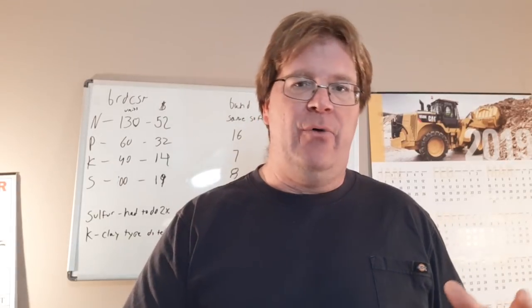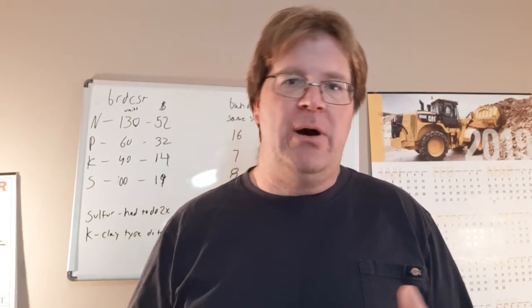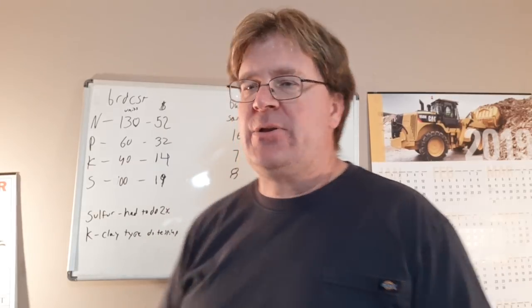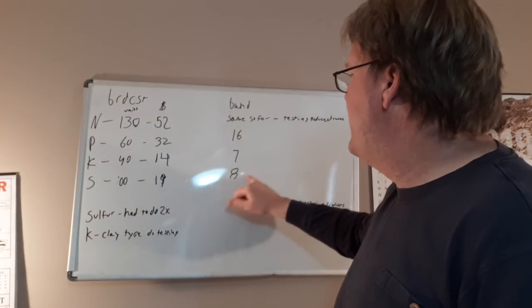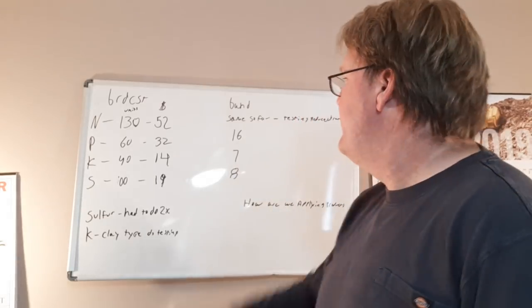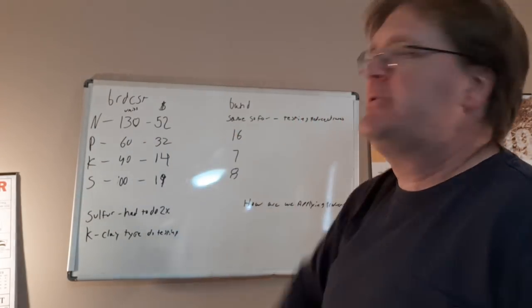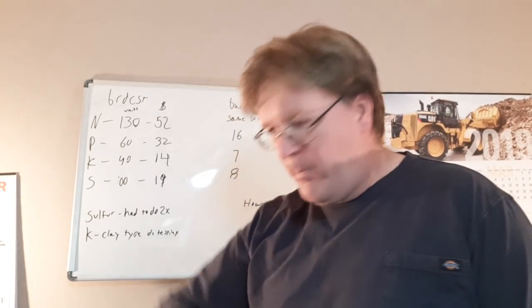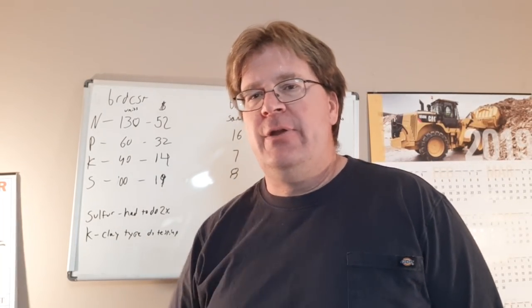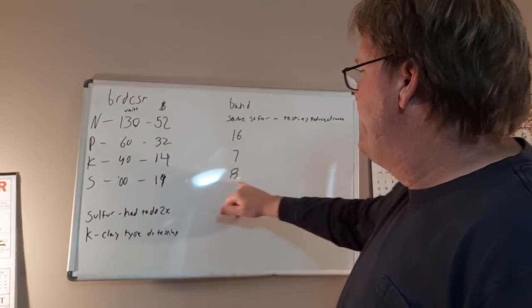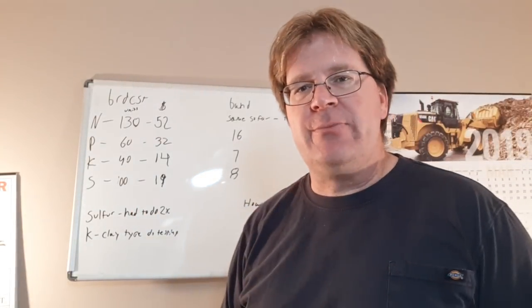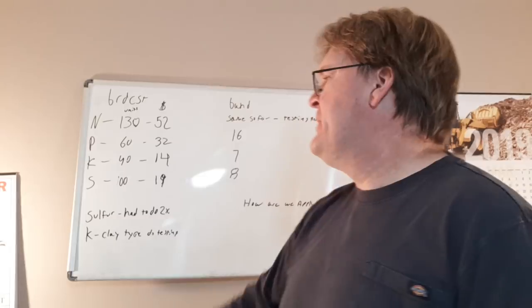To control our macro expenses, we went to strip till. Strip till saved mechanical costs — horsepower, labor, and equipment — but the big thing was right off the top: 50% applied P and K, cutting those dollars in half. We saved about 30 bucks per acre right off the top.